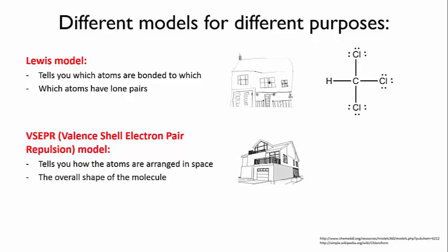And this is where the VSEPR model comes in. VSEPR stands for Valence Shell Electron Pair Repulsion, and in the next video I'll explain what that means and how the theory works.